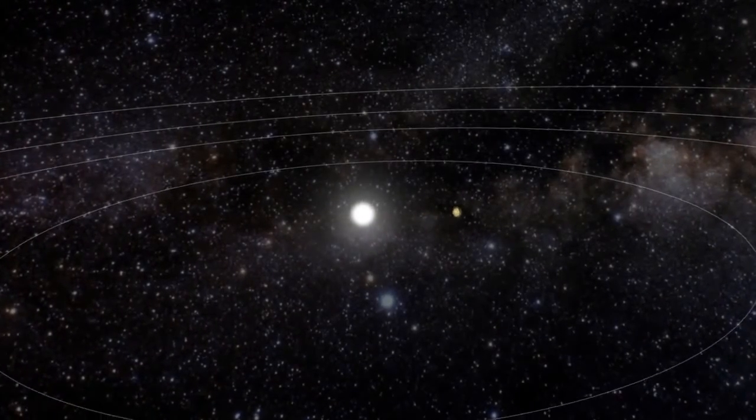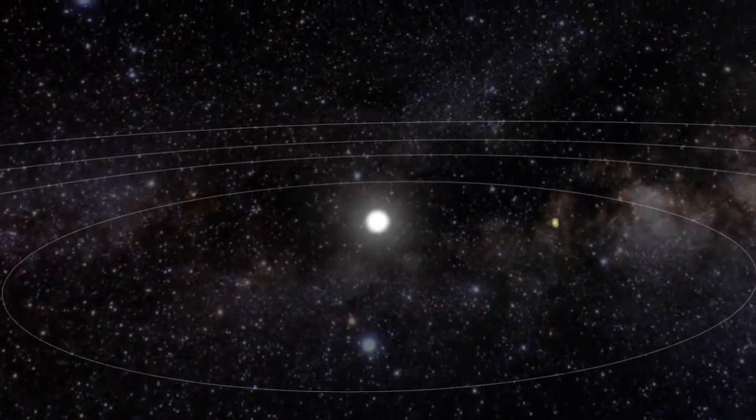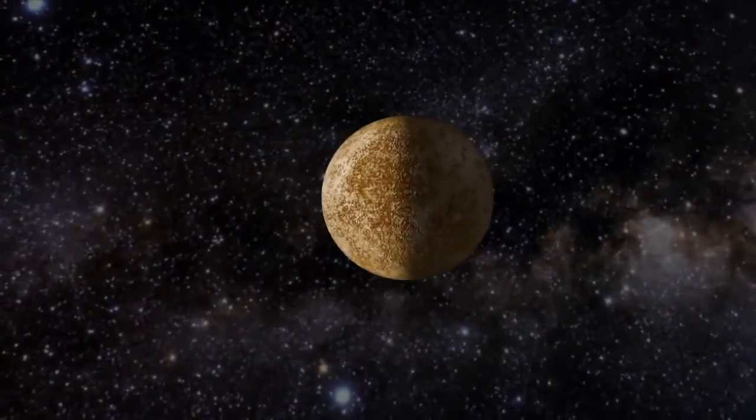The solar storm can reach speeds over 8 million kilometers an hour. After 6 hours, it blows past the planet Mercury.